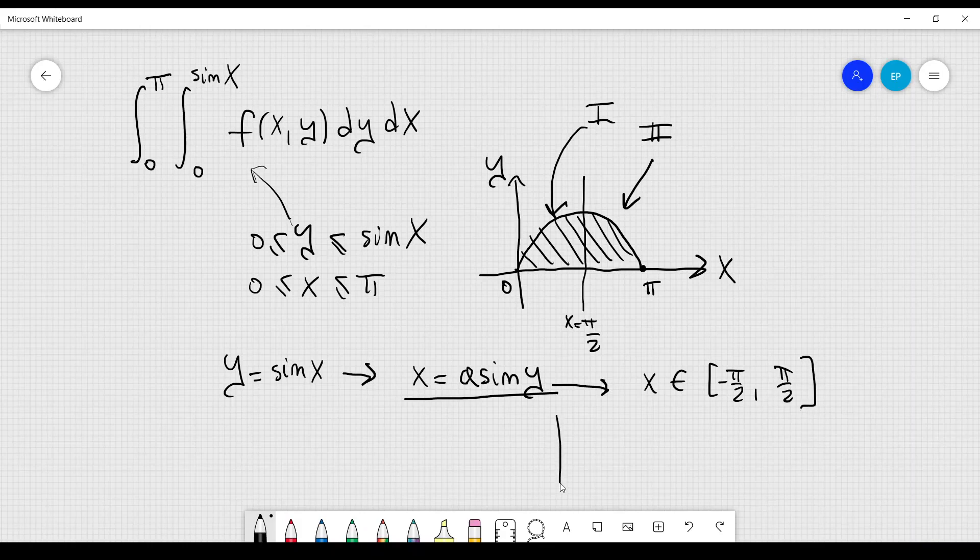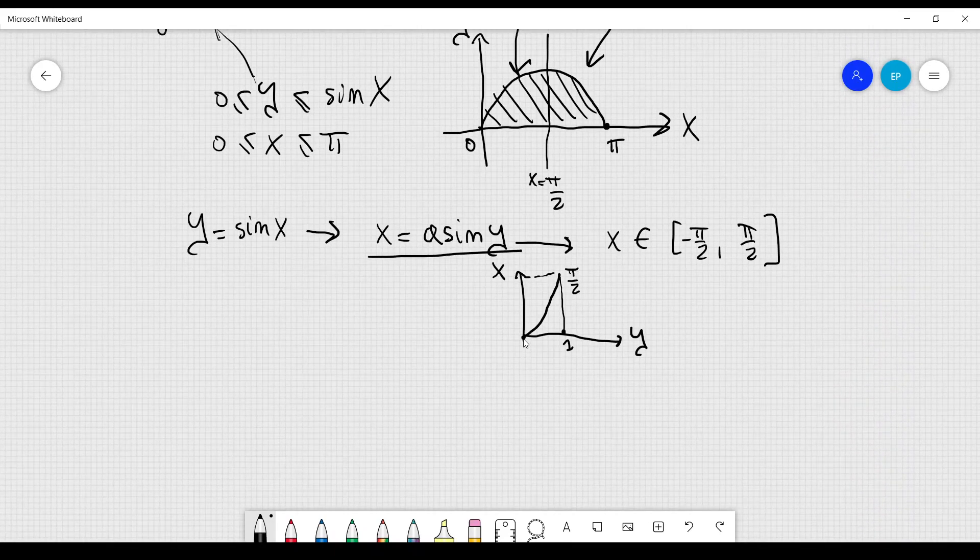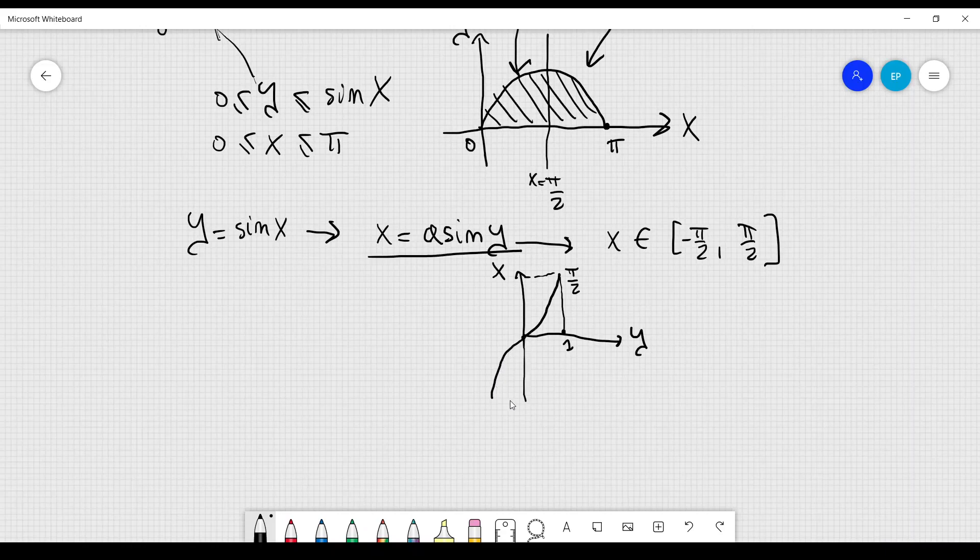In particular, here, let me draw it like this. I have y here and x here, and this function is something like this. It goes all the way up to x equal to π over 2 when y is equal to 1. So here we have π over 2, whereas here it goes down like this. Here we have x equal to minus π over 2 at y equal to minus 1.